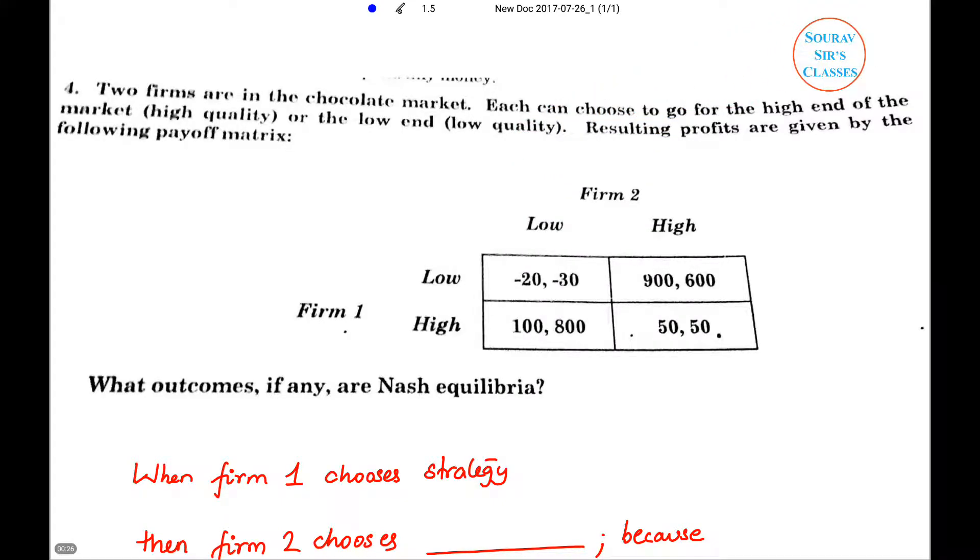Today's question will be: there are two firms in a chocolate market, and each firm chooses to go for both high end of the market (high quality) or the low end. So there are two firms with two options: high and low end. Resulting profits are given by the following payoff matrix.